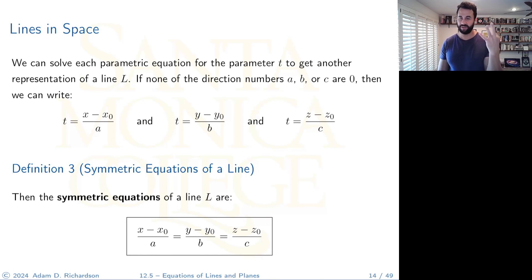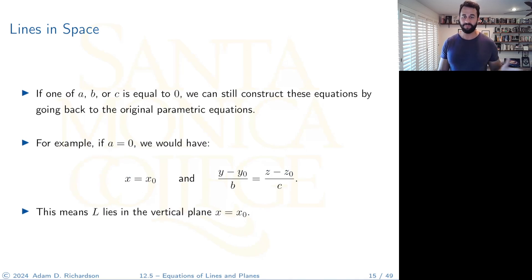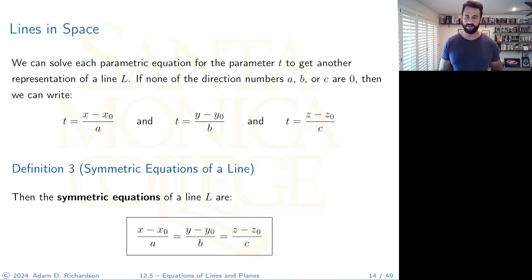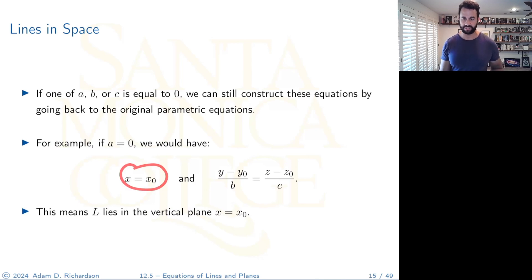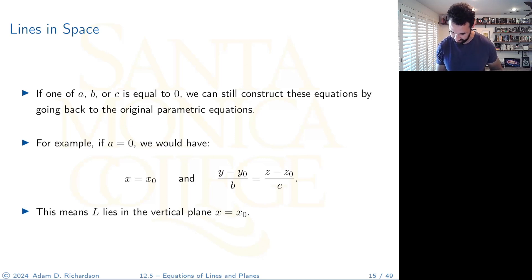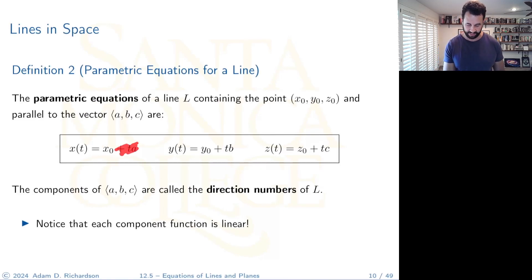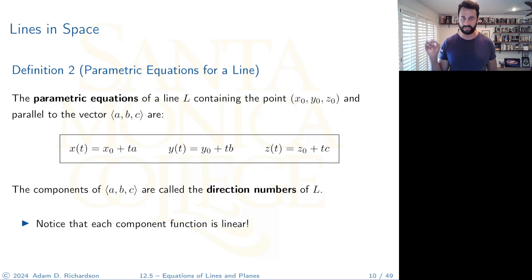We now have three ways to describe a line: vector equation, parametric equations, and symmetric equations. If one of a, b, or c equals zero, you can't divide by it, but going back to the parametric equations, that coordinate becomes a constant. For example, if a = 0, then x = x₀ and the line lies in the vertical plane x = x₀.